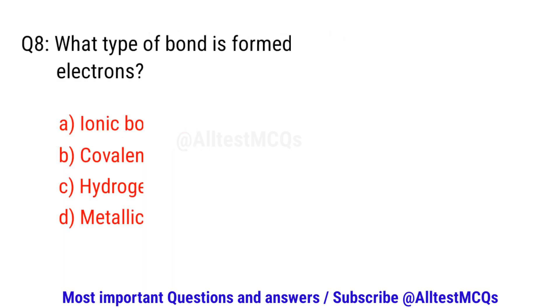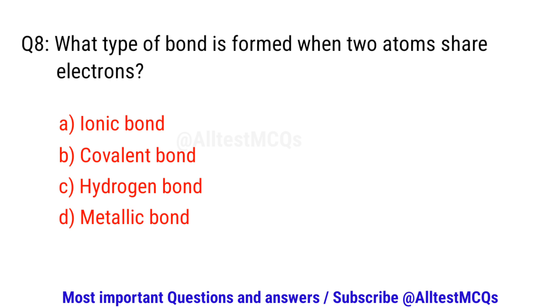Question number eight. What type of bond is formed when two atoms share electrons? The right option is B. Covalent bond.